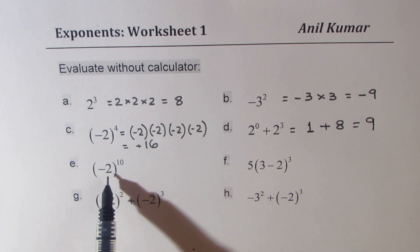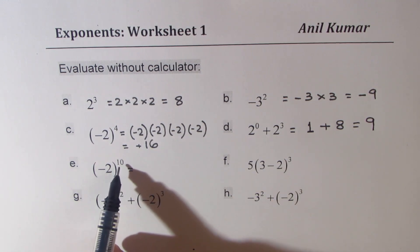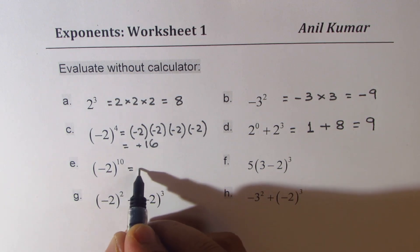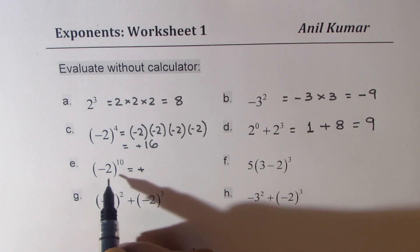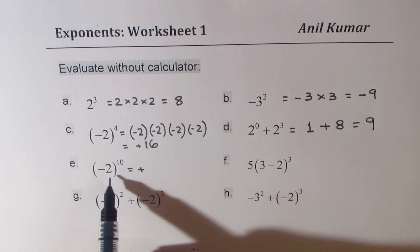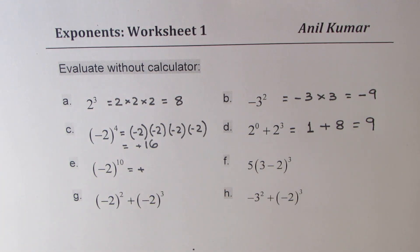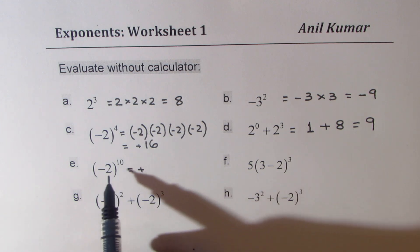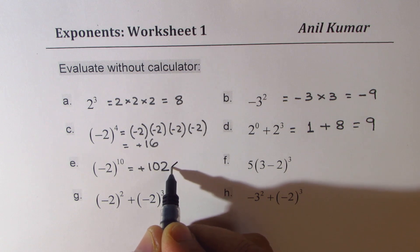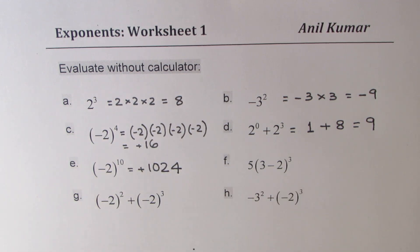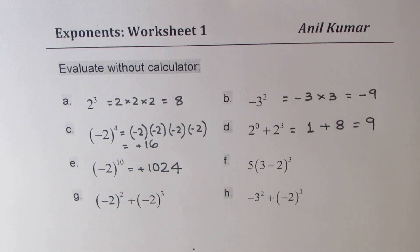Now we have minus 2 to the power of 10. Since the power is even — 10 is an even number — we expect a positive result. Now 2 to the power of 10 is also called kilobytes or kilo. Multiply 2 by itself 10 times and you get 1024 as your result. It's a good number to remember: 2 to the power of 10 is 1024. This minus is within the bracket and therefore we got a positive answer.